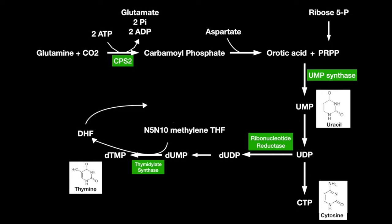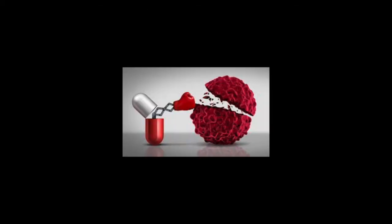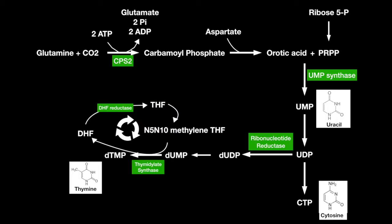DHF can be recycled by turning it into THF by DHF reductase, then back into N5-N10-methylene-THF. Now let's go over the drugs that inhibit this pathway, which have purposes such as immunosuppressive, antineoplastic, and antibiotic.